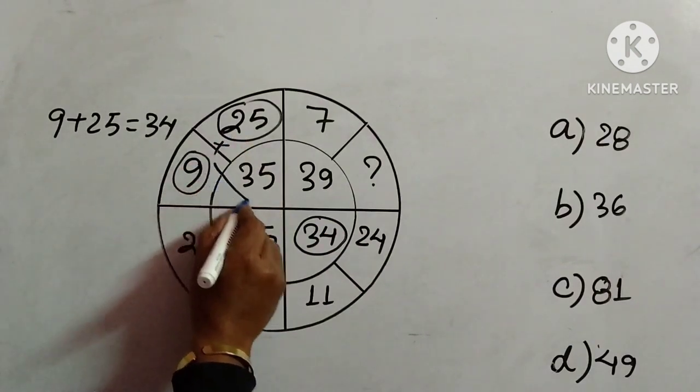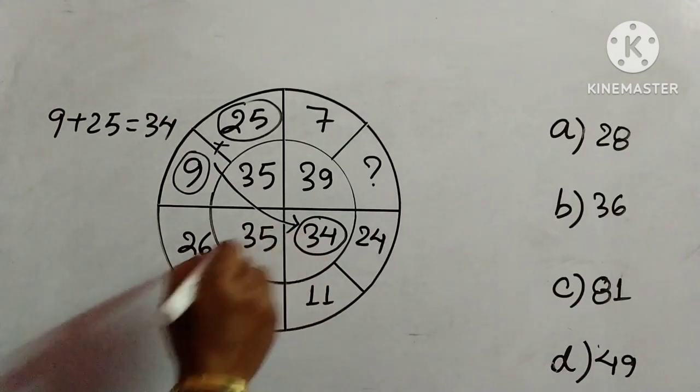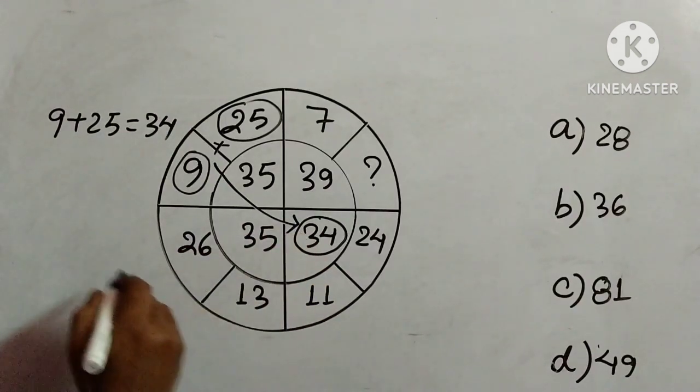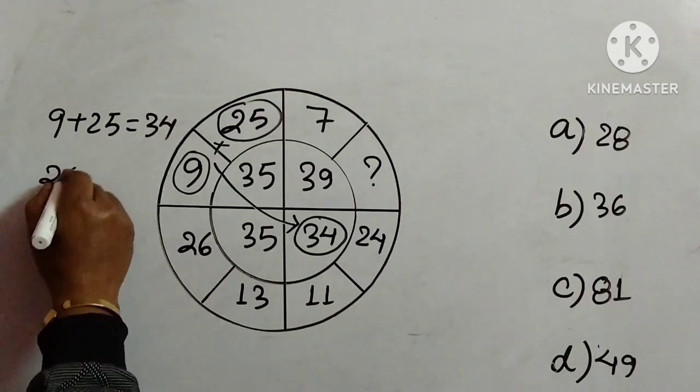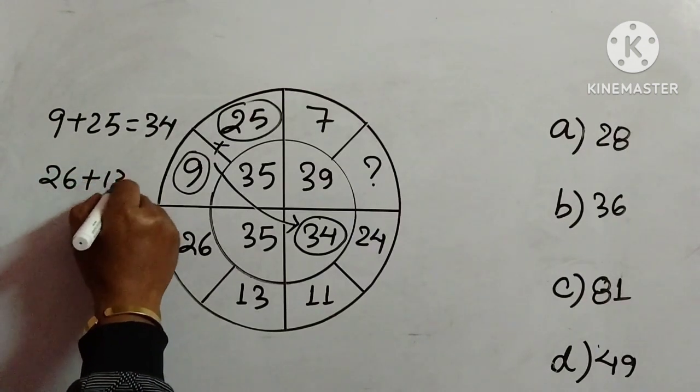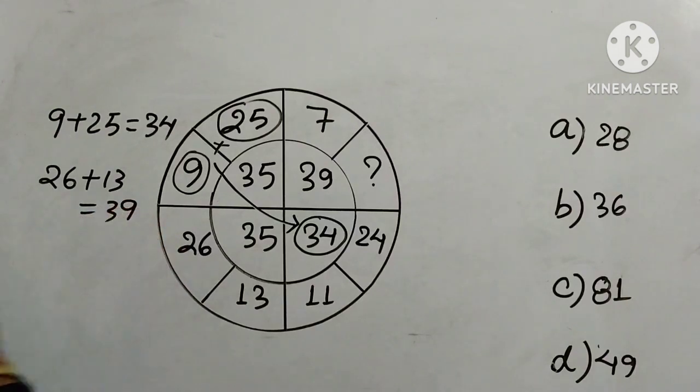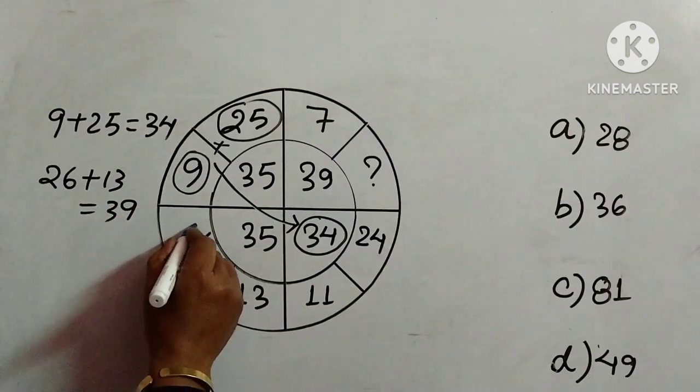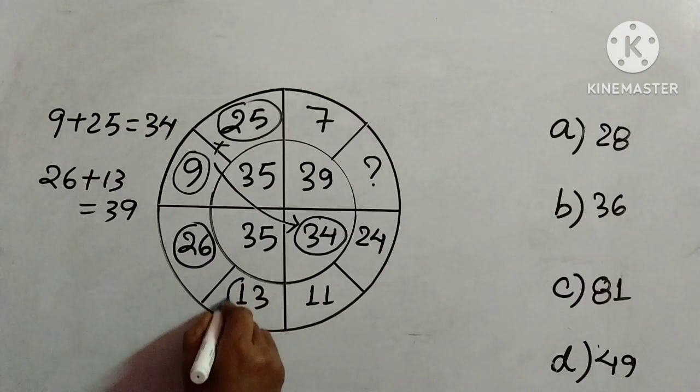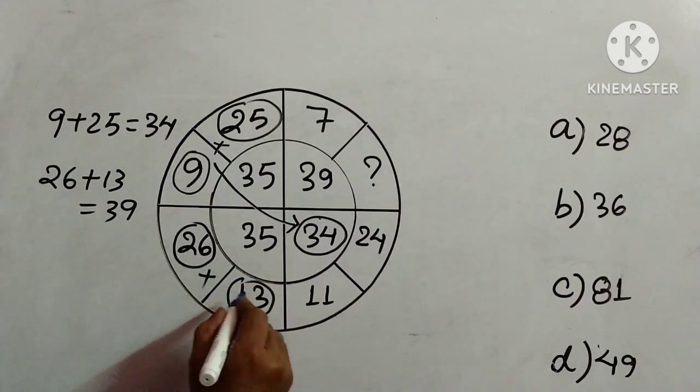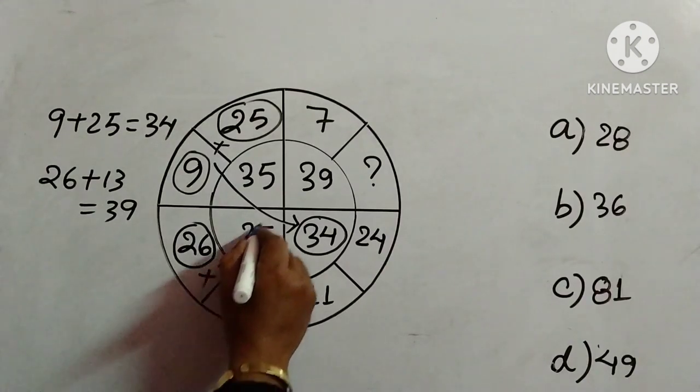We will check this one: 26 plus 13 is how much? It is 39. So here we are considering 26 and 13, adding them, and where is the result? We are getting the result over here: 39.